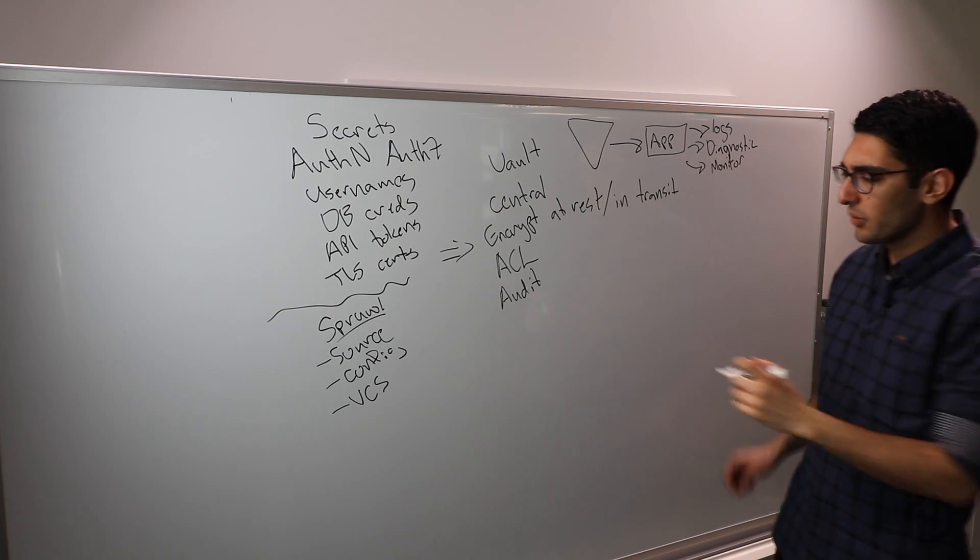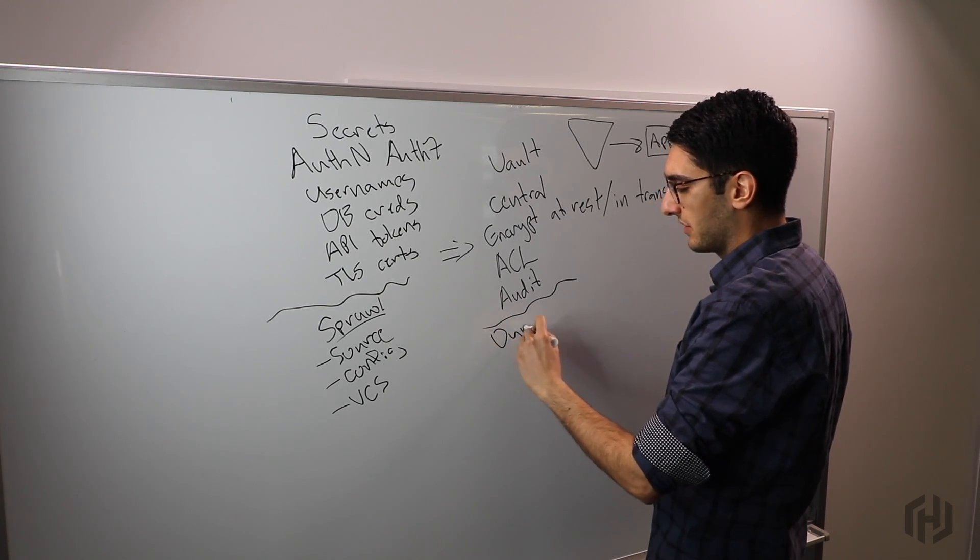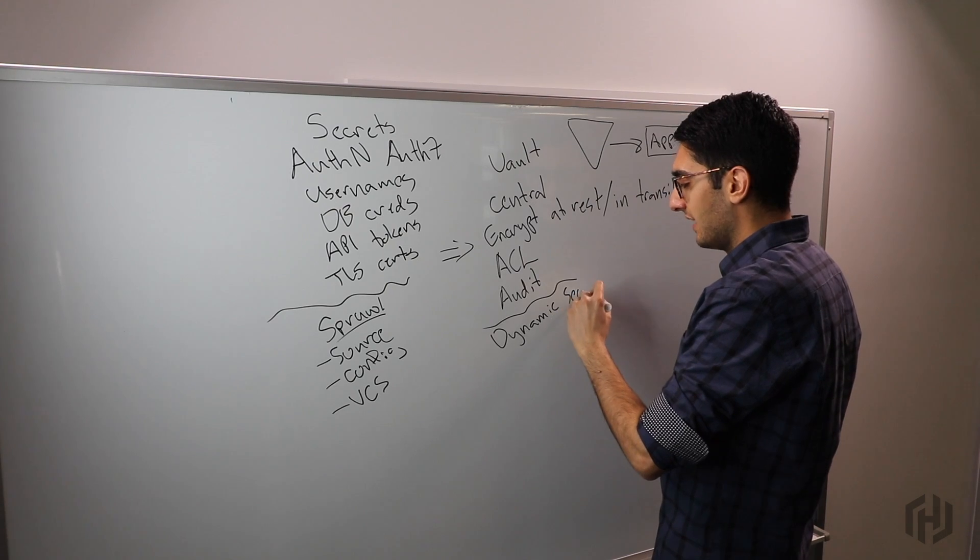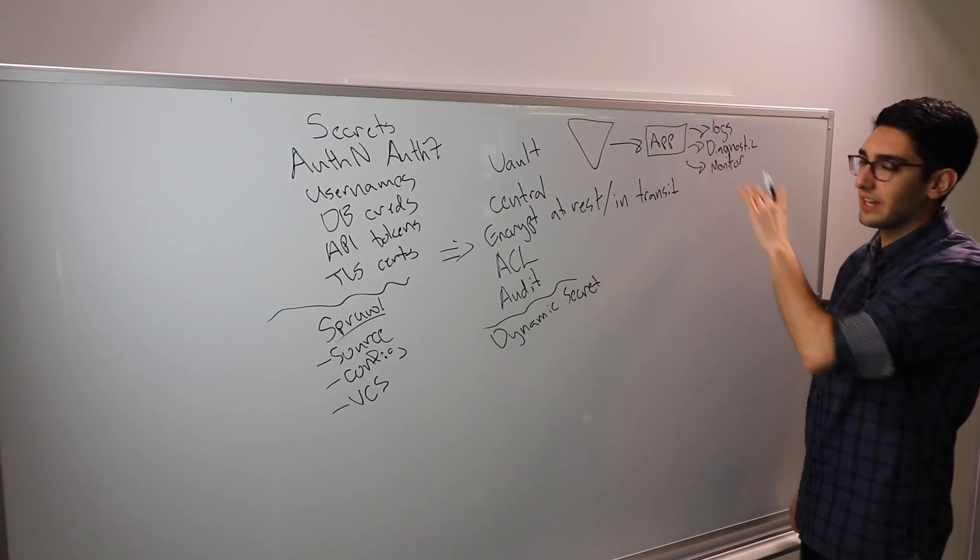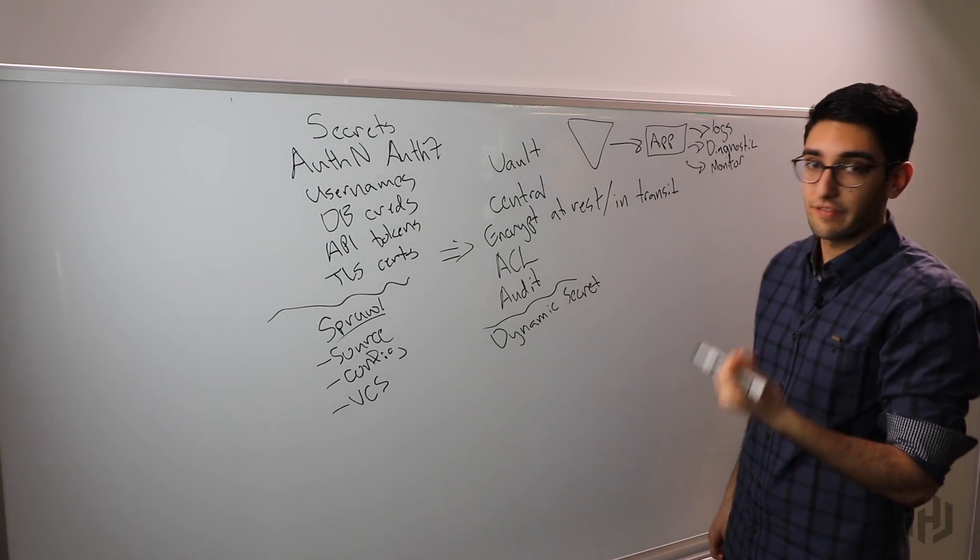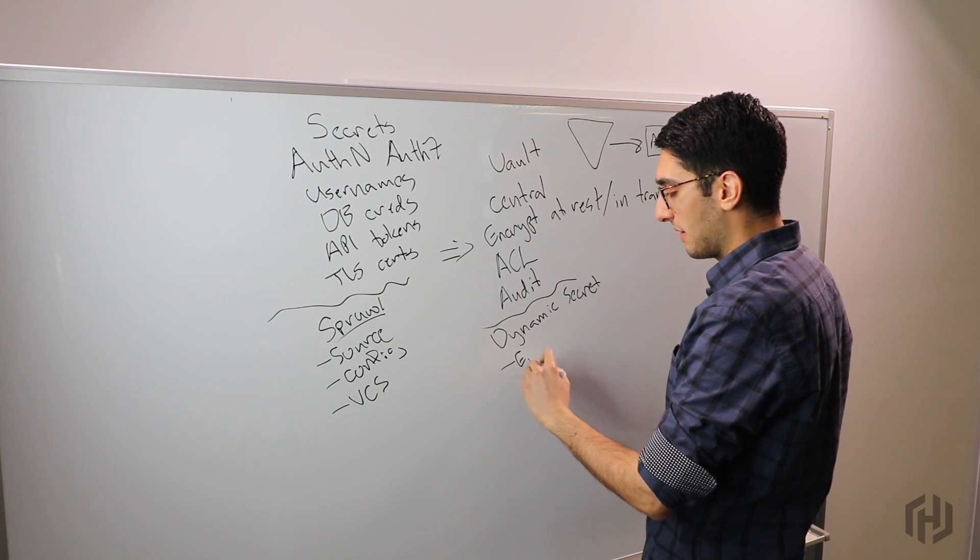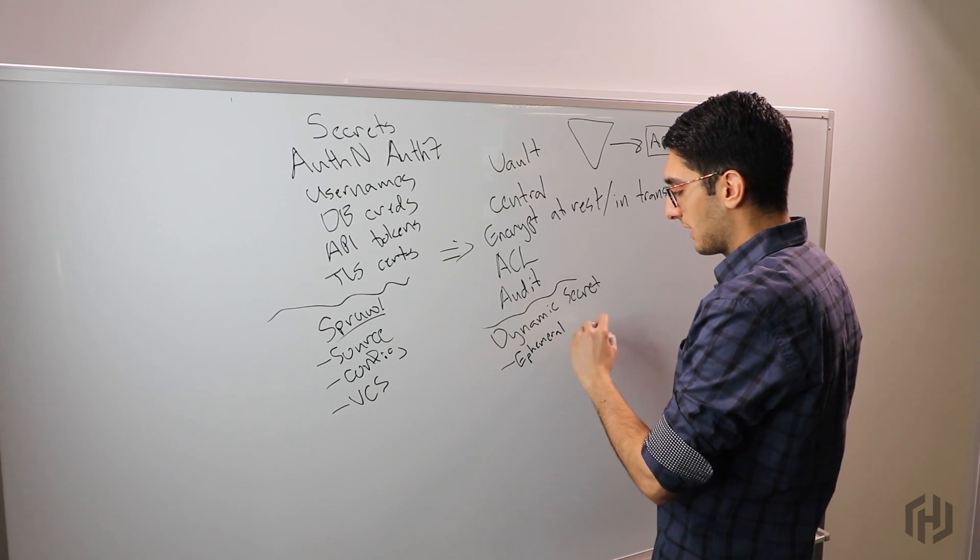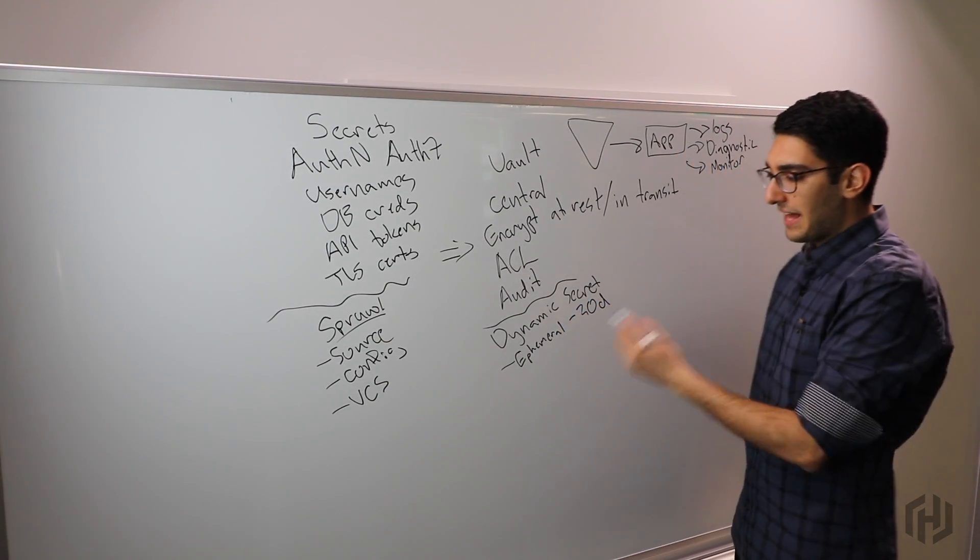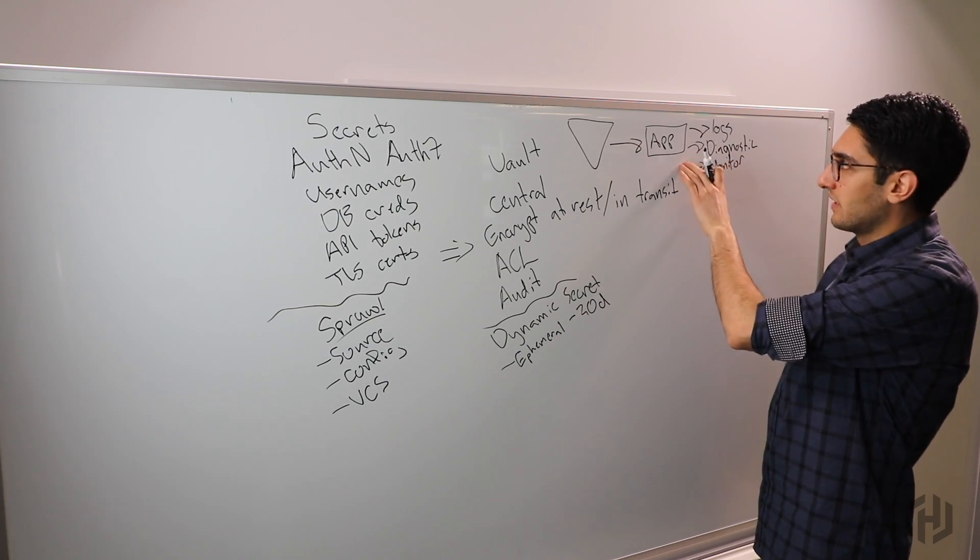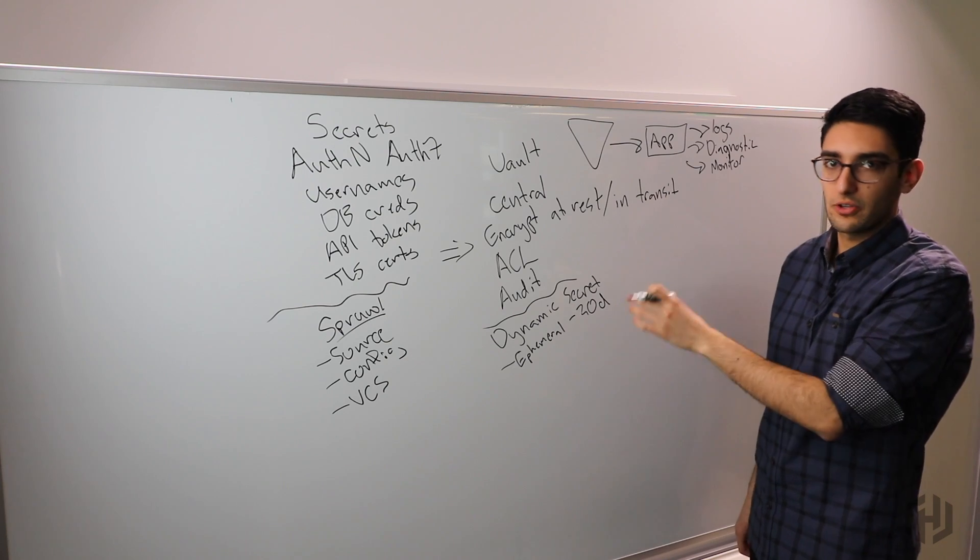One of the second level capabilities Vault introduces is what we call dynamic secrets. The idea behind a dynamic secret is, instead of providing a long-lived credential to the application which inevitably leaks, we provide short-lived ephemeral credentials. These things are dynamically created but they're ephemeral, so we might only give a credential to an application that's valid for 30 days. The value is that even if the application leaks this credential, it's only valid for a bounded period of time.